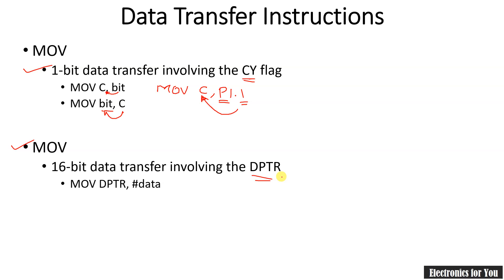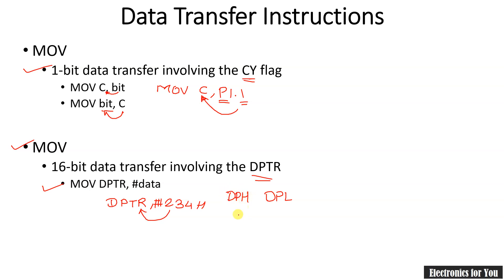16-bit data transfer is available for the DPTR (data pointer) register. The instruction MOV DPTR, #data16 — for example, MOV DPTR, #1234h — copies the 16-bit value 1234h into DPTR. DPTR has two parts: DPH (high byte) and DPL (low byte). So 12h goes into DPH and 34h goes into DPL.